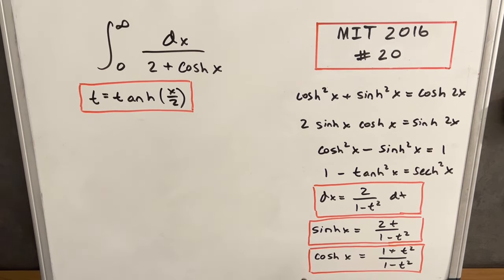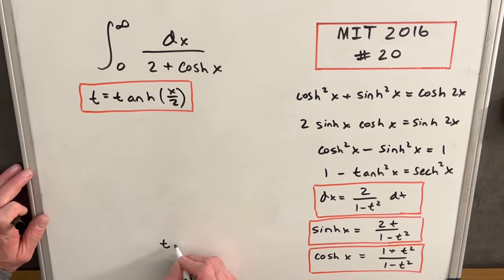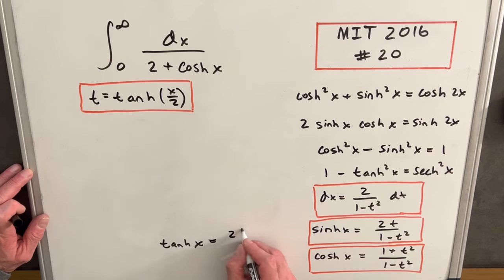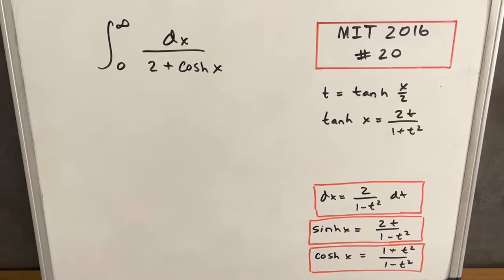One more thing before I continue: if we needed a formula for tanh(x), that's going to be easy, because we can just divide sinh by cosh, and we would have 2t over 1 plus t squared. So now I think we have everything we need and we can make our substitution.